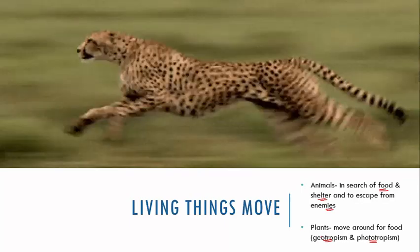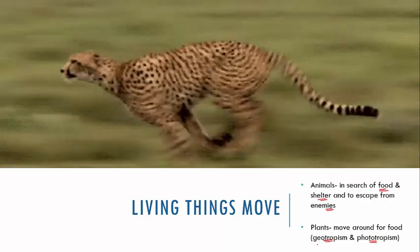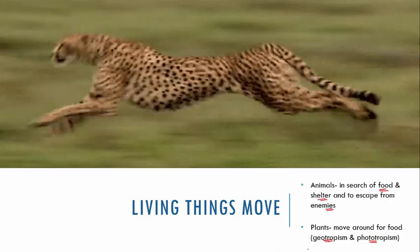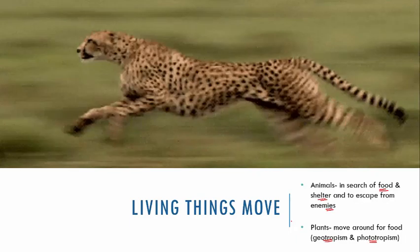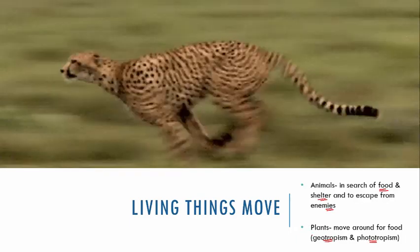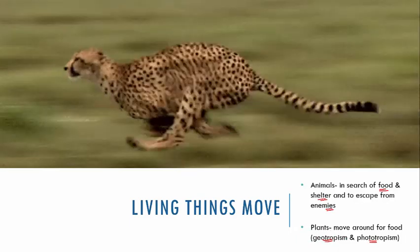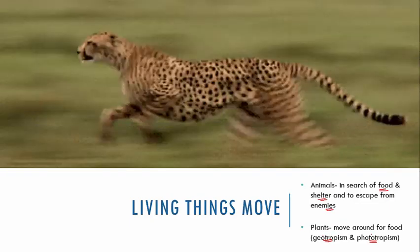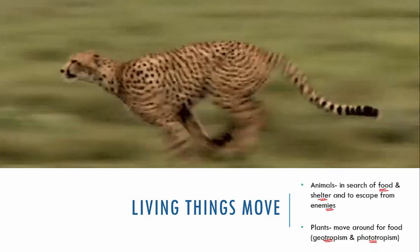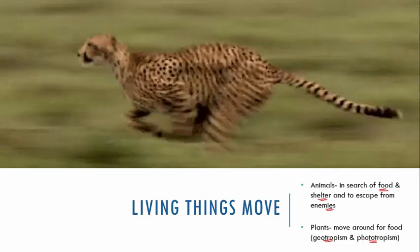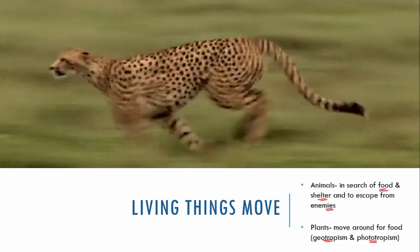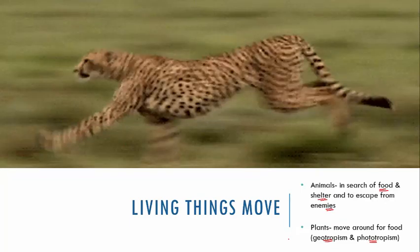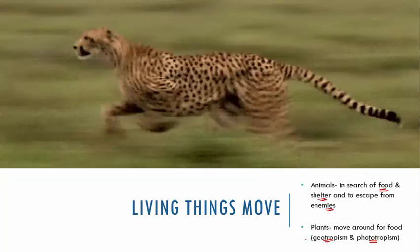When you see geotropism, the roots of the plant underground or inside soil will move in search of minerals. This kind of movement under the soil by the roots is called geotropism. Whereas above the soil, if you look at the plant — if you take sunflower for example — it will turn and face towards the sun. This is called phototropism, where the plant moves or bends towards the rays of the sun. So with this, we know very well that living things move.